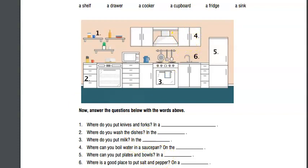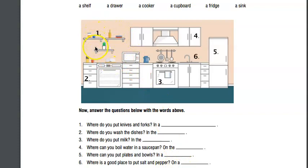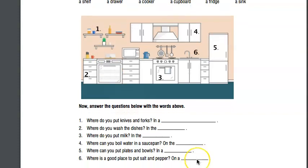Where can you put plates and bowls? In a cupboard - up here in a cupboard. Note that the 'p' is silent, so it's pronounced 'cupboard.' Where is a good place to put salt and pepper? On a shelf. We have one, two, three shelves - singular 'shelf,' plural 'shelves' with a V.